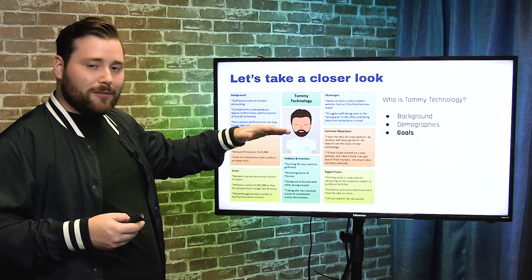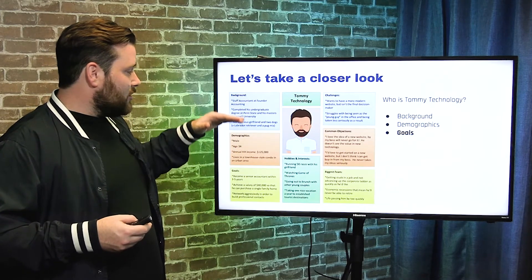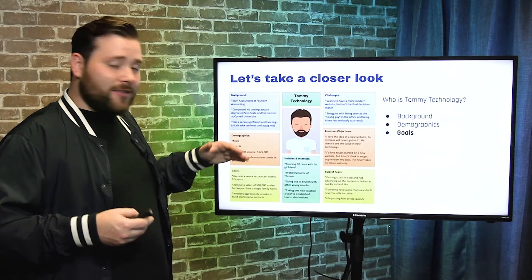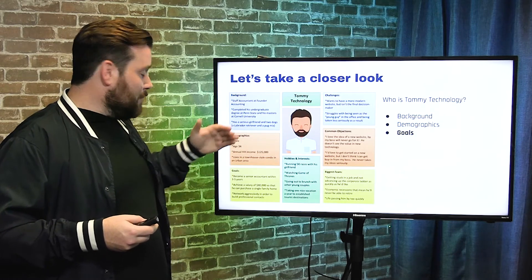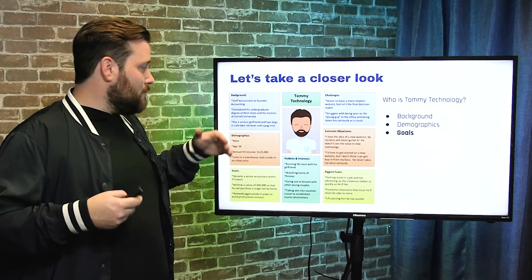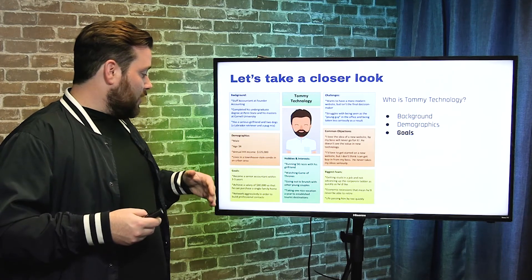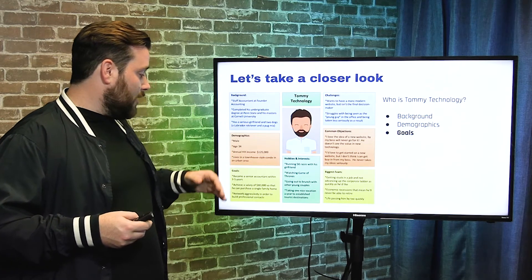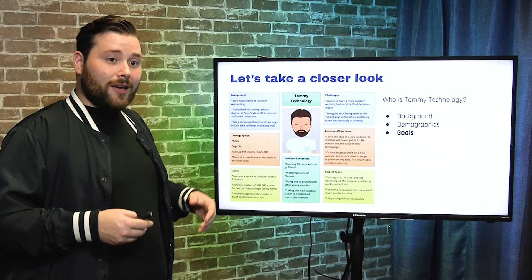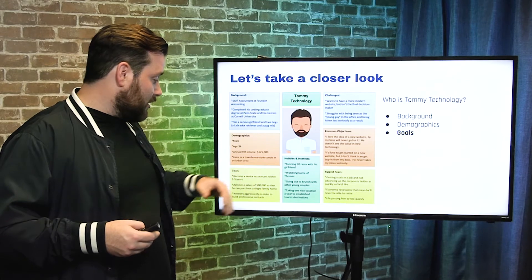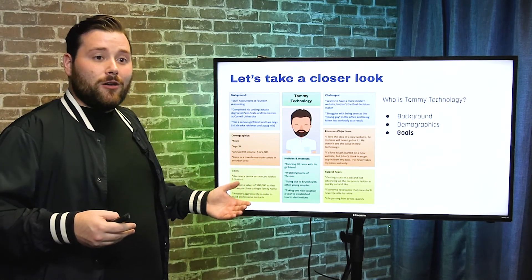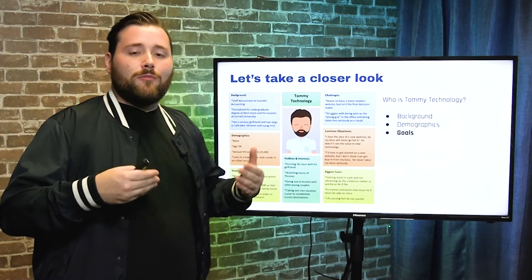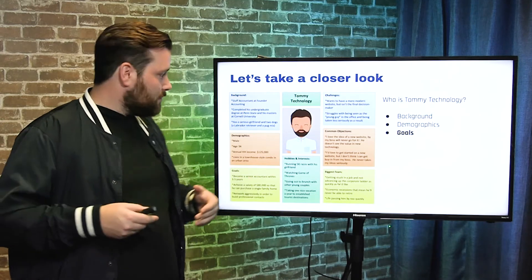Think about this — Tommy seems like a pretty stable, educated guy. He's got a serious girlfriend and is probably thinking about getting married and starting a family at some point. He's currently in a townhouse-style condo in an urban area, but he likely wants to settle down in the suburbs, get a nice house, and start a family — which is why he wants to reach that $80,000 salary. We're starting to learn about his motivations, and we can use those when crafting our ad copy.